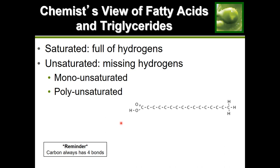If we look at each carbon in the chain, each already has two bonds — one on the left and one on the right — holding the adjacent carbons. So each carbon has two bonds used, but carbon always needs four bonds total. That means each carbon needs two more bonds to fulfill its bond requirement, so the maximum it could carry would be two hydrogens each.